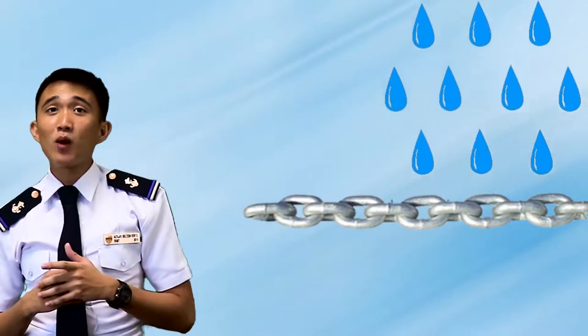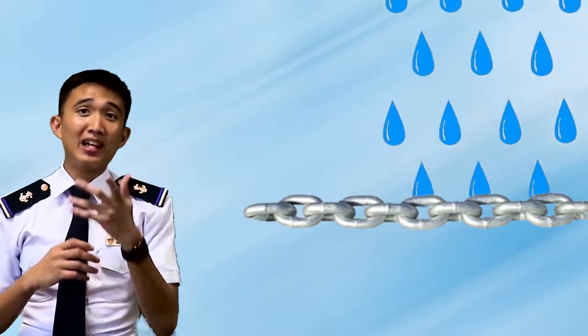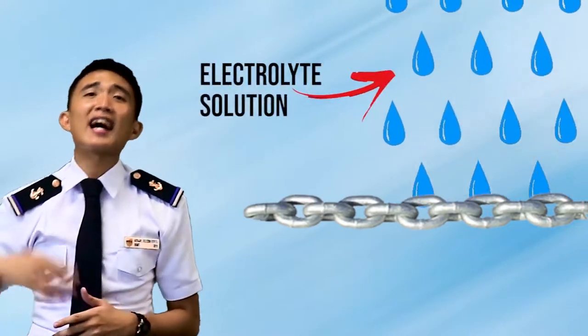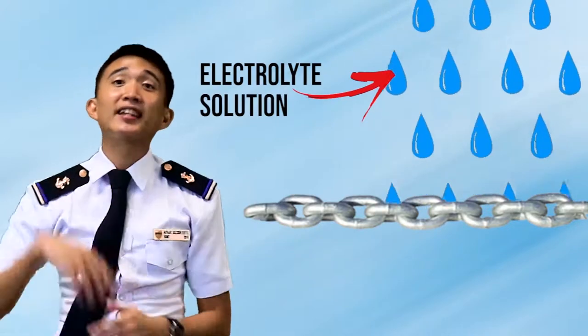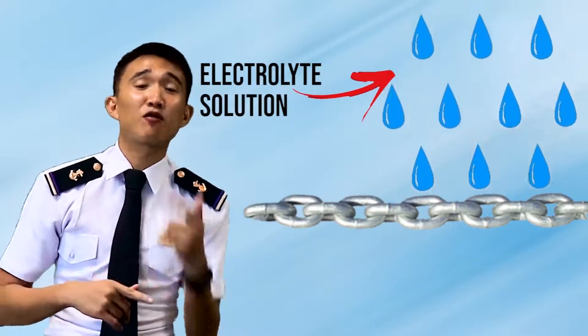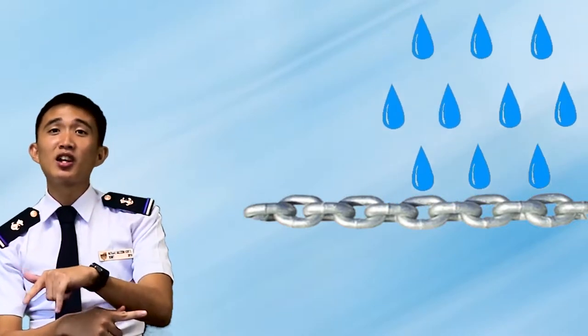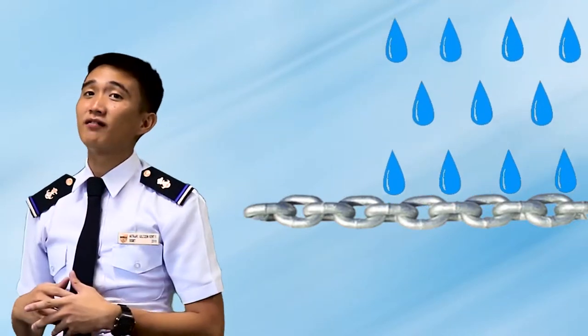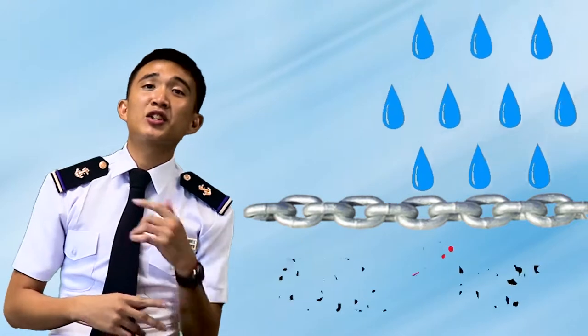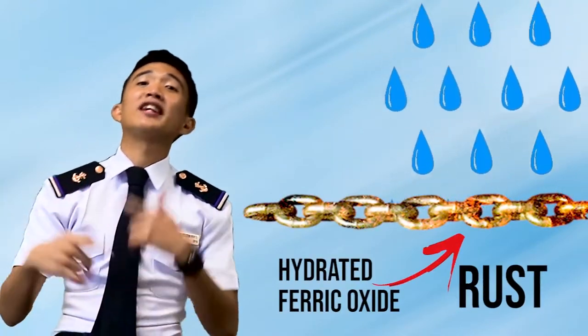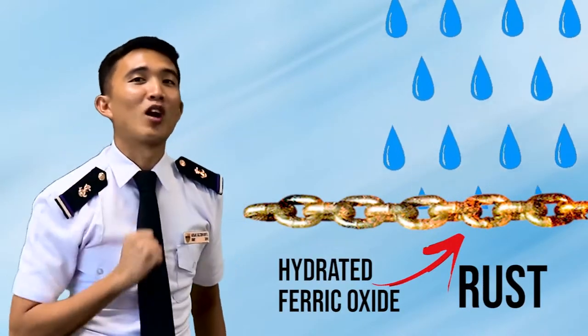Have you ever wondered why that anchor chain rusts after being left out in the rain? Well, water is the electrolyte solution that helps rust form. Once the chemical reaction occurs, which is called the redox reaction, the iron turns into hydrated ferrous oxide, which is called rust.